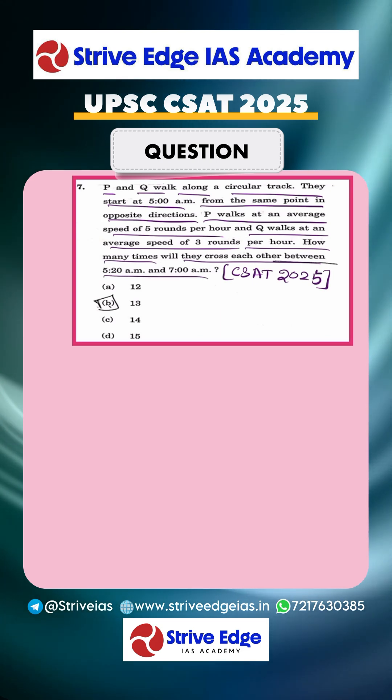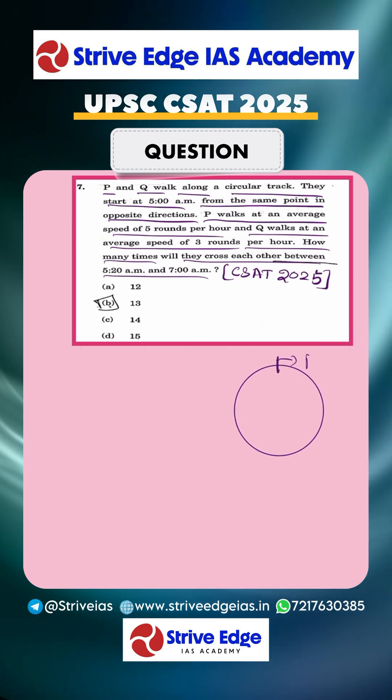So let's draw a circular track. In a circular track, P, let's say this is the direction of P. P travels 5 rounds per hour and Q travels 3 rounds per hour. So we know that when their speed ratio P is to Q equals 5 is to 3,